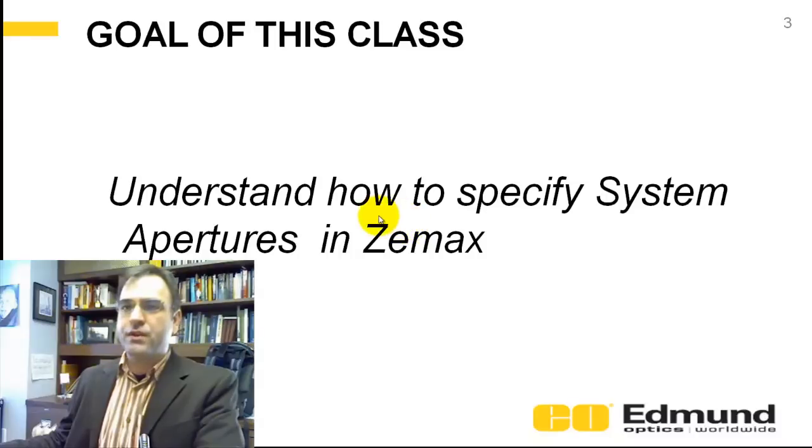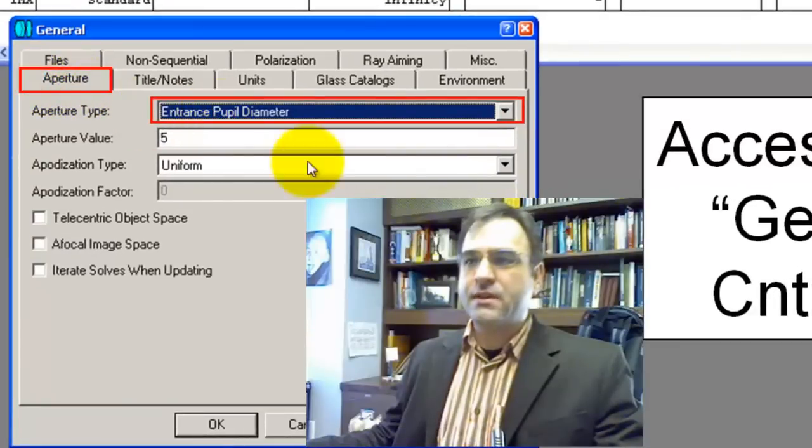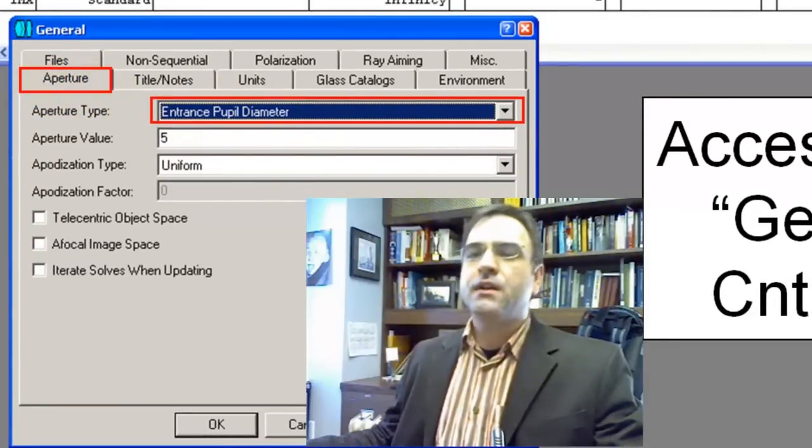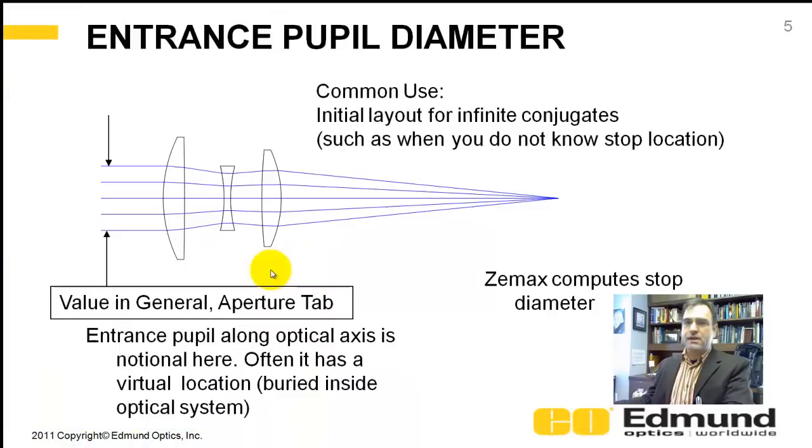This is under the general command, the general tab. So this aperture here, how we set this, this is just an example. This isn't ZEMAX here. So again, you get this by the general button or control G. There's several ways, there's several things that can pop up in there.